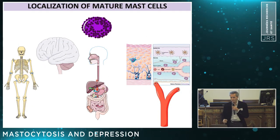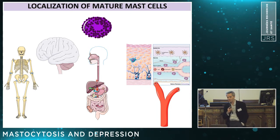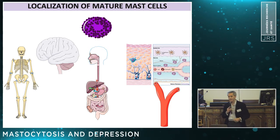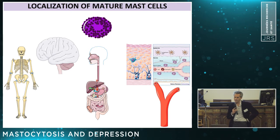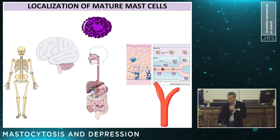What about the localization of mast cells in the body? Mainly in the skin in a perivascular localization, but also in the digestive tracts, in the bones, and — for our interest here — in the brain.